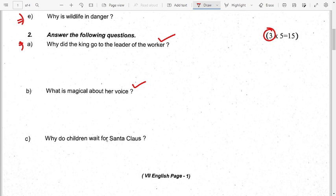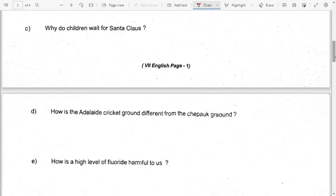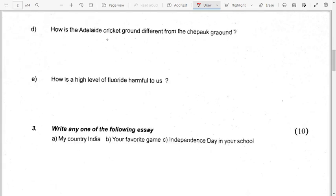Why do children wait for Santa Claus? How is the Adelaide cricket ground different from the chepauk ground? Adelaide cricket ground different shape and size, oval or circular, bigger or smaller. How is high level fluoride harmful to us?